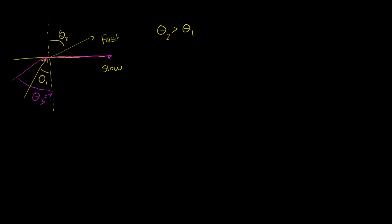And if I had an incident angle larger than that, larger than theta 3, so if I had an incident angle like that, the light won't actually even travel along the surface — it definitely won't escape, it won't even travel on the surface, but it'll actually reflect back. So you actually have something called total internal reflection.